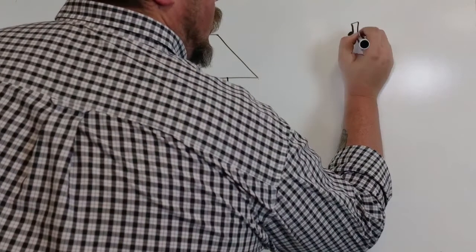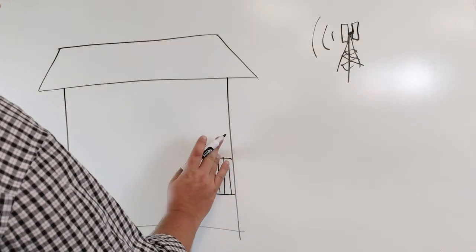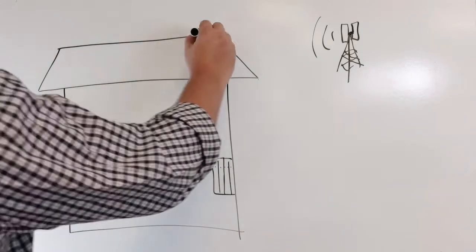In a signal booster system there are two components that receive and transmit signal. These are called donor and broadcast antennas.